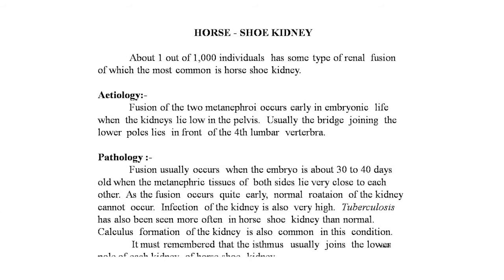Now, the horseshoe kidney. About 1 in 1000 individuals have some type of renal fusion, of which the most common is horseshoe kidney. Etiology: fusion of the two metanephroi occurs early in embryonic life when the kidney lies low in the pelvis. Usually the bridge joining the lower poles lies in front of the fourth lumbar vertebra. Fusion usually occurs when the embryo is about 30 to 40 days old, when the metanephric tissues of both sides lie very close to each other.